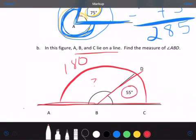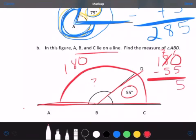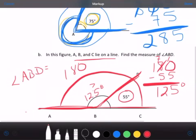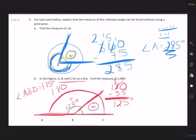So if I subtract the 55, that will give me the total for the angle we're looking for. 0 minus 5, you can't do it. So you borrow from the 8, leaving you with 7. 10 minus 5 is 5. 7 minus 5 is 2. 1 minus nothing is 1. So it's 125 degrees. So you've got 125 degrees for angle ABD. Angle ABD equals 125 degrees.